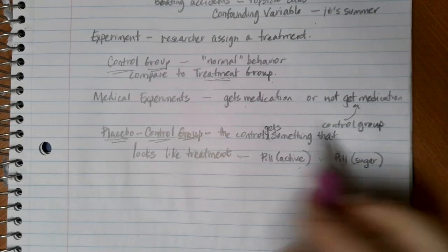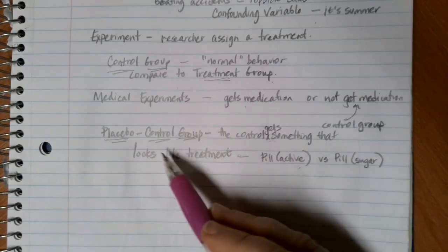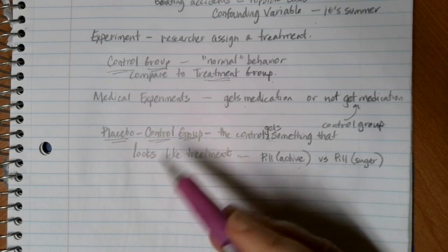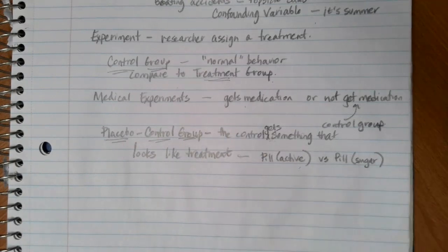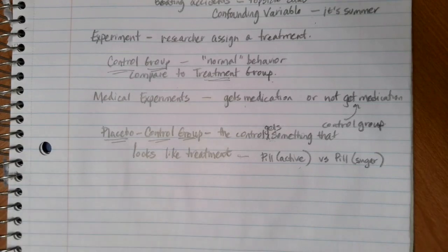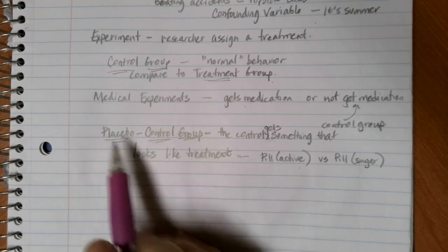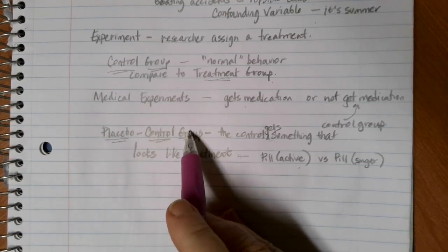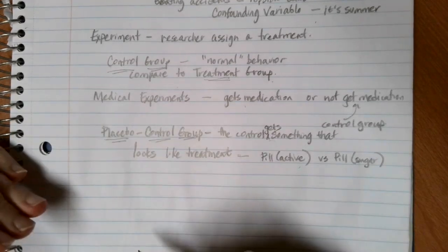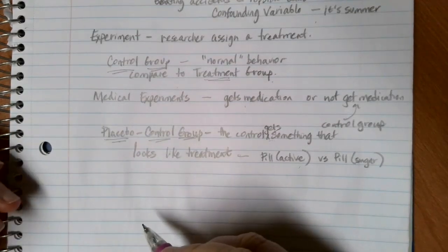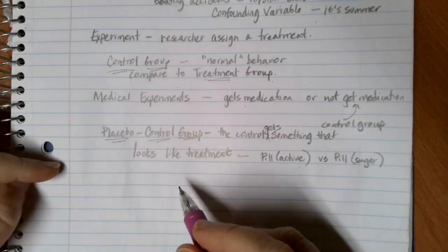That way we overcome any of this mental association with just because I got a pill, I feel better. And so you could actually run an experiment where you have a placebo control group, the control group where they get no medication, and then the control group that gets the actual medication. And so you can kind of do these layers to try to eliminate as many factors as possible to get the most accurate reading.